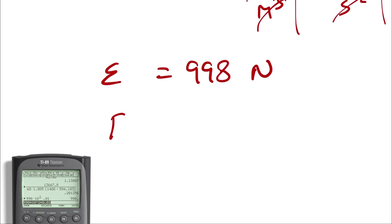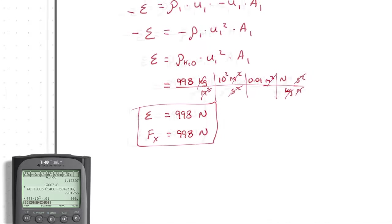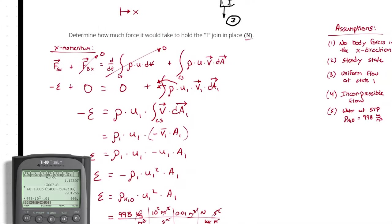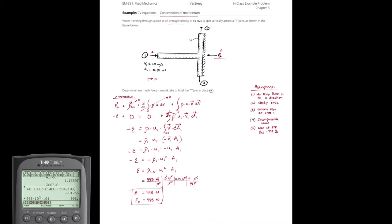And that was fx. So what we take away from this analysis is that all of the x component of the momentum has to be stopped by the joint.